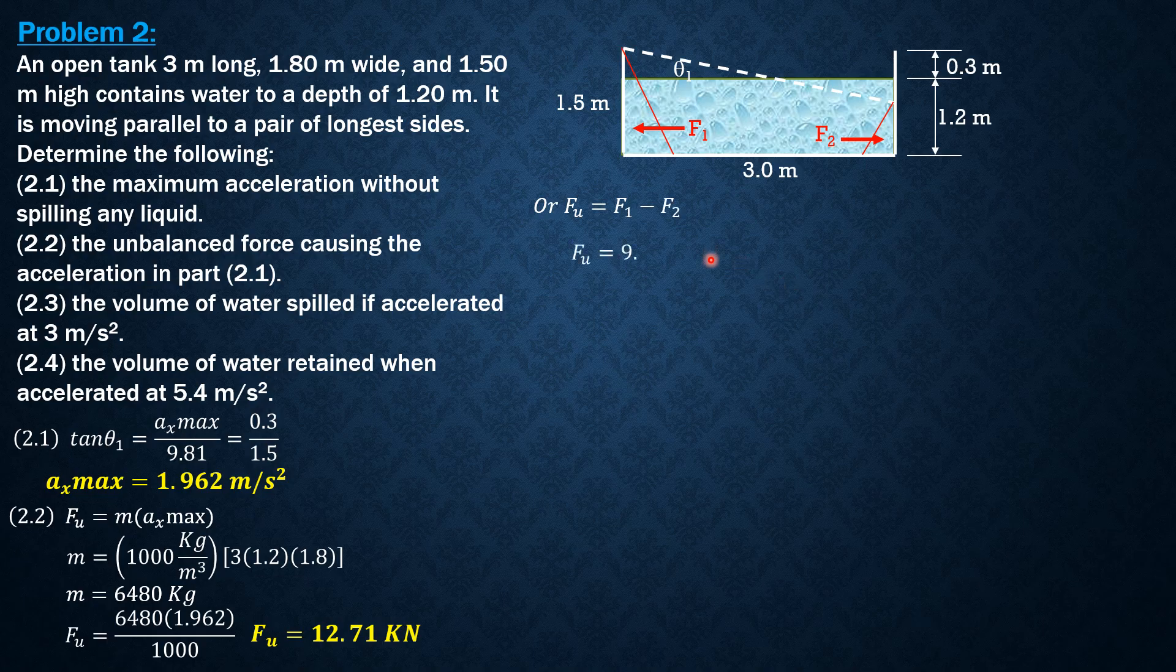So Fe is F1 minus F2, where F1 is gamma of water times 1.5 over 2, that's the bar H, and the area is 1.8 times 1.5. While F2 is 9.81, bar H is 0.9 over 2, and the area is 1.8 times 0.9. Computing for Fe, it will also give us 12.71 kilonewtons.